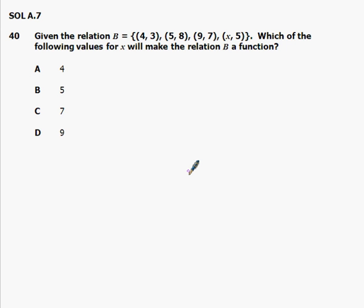The next question I'm helping you with is number 40. Given the relation b equals set (4,3), (5,8), (9,7), (x,5), which of the following values for x will make the relation b a function? Let's review what a function is.